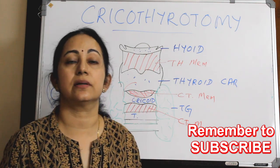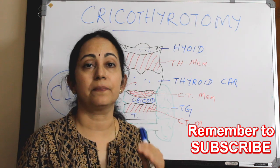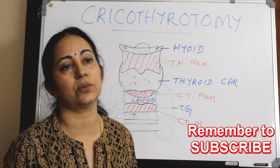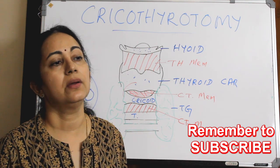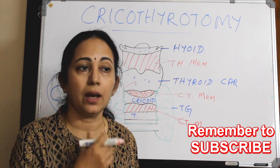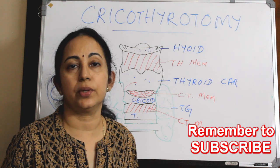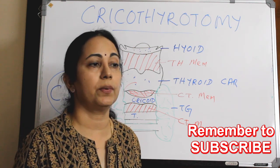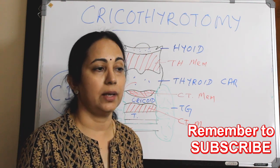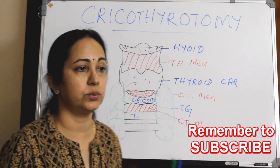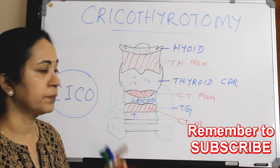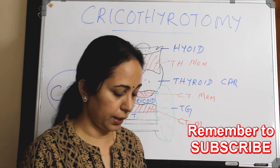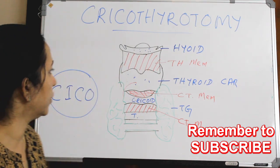Opening the cricothyroid membrane is called cricothyroidotomy. Once we have breached or opened the cricothyroid membrane, we can maintain the airway either by putting a mini tracheostomy tube or by inserting a large bore, wide bore needle through it. So what are the indications of doing a cricothyroidotomy?